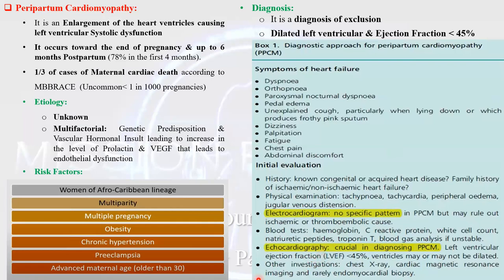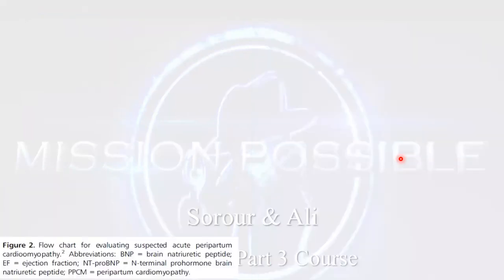Quick review: we know the definition of peripartum cardiomyopathy, the timing of occurrence, and the incidence of less than 1 in 1,000 pregnancies. The etiology is unknown but multifactorial — remember the genetic predisposition and vascular hormonal insult. Know which women are at increased risk, and that diagnosis is one of exclusion with a dilated left ventricle and ejection fraction less than 45%.